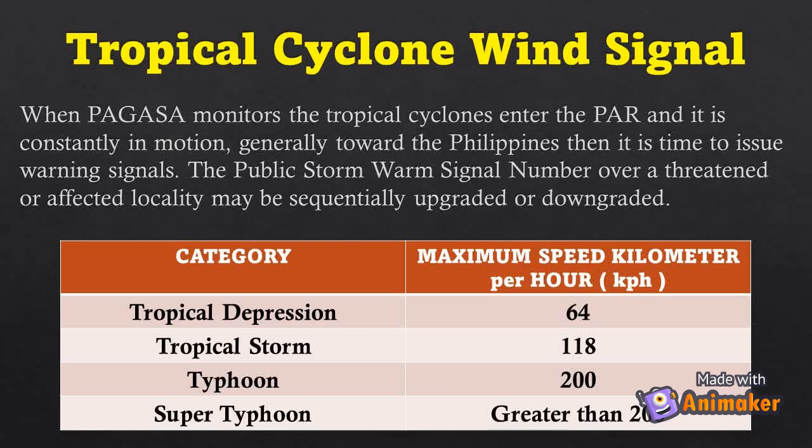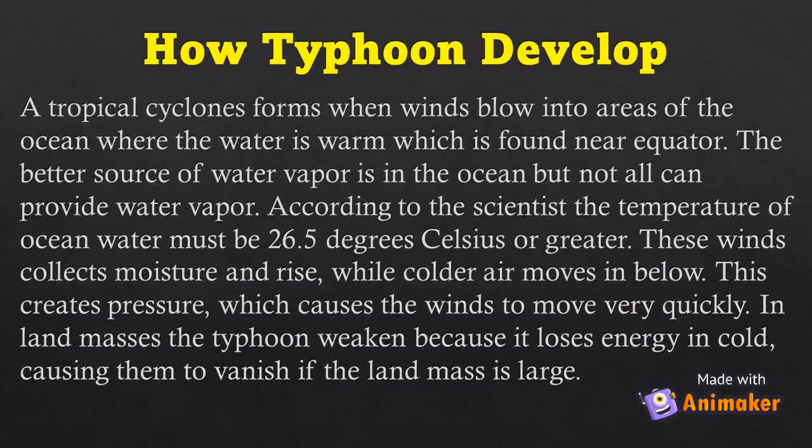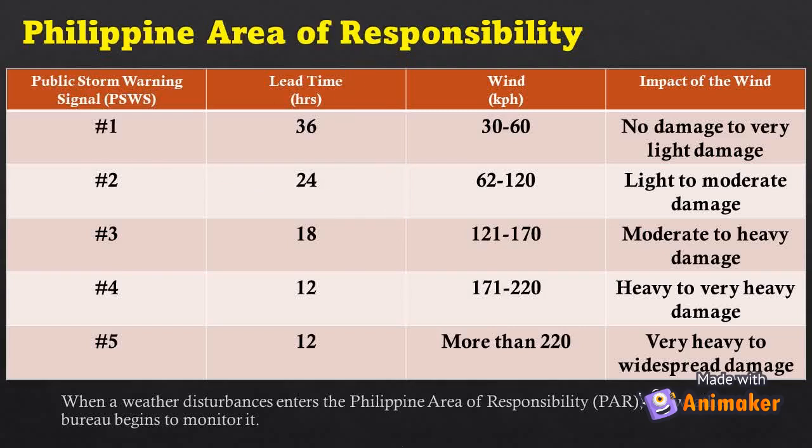How do typhoons develop? A tropical cyclone forms when winds blow into areas of the ocean where the water is warm, found near the equator. The ocean is the main source of water vapor, but not all ocean areas can provide it. According to scientists, the temperature of the ocean water must be 26.5 degrees Celsius or greater. These winds collect moisture and rise while colder air moves in below, creating pressure that causes winds to move very quickly. Over land masses, the typhoon weakens because it loses energy, causing it to vanish if the land mass is large.